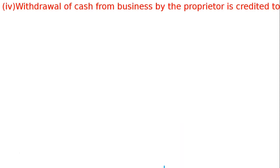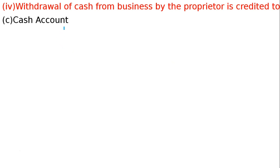Fourth question: Withdrawal of cash from business by the proprietor is credited to which account? Cash nikal liya — business ka asset ghad gaya. Withdrawal of cash from business by the owner is credited to cash account. Decrease in asset is credited, and the answer is option C: credited to cash account, because decrease in asset is credited.